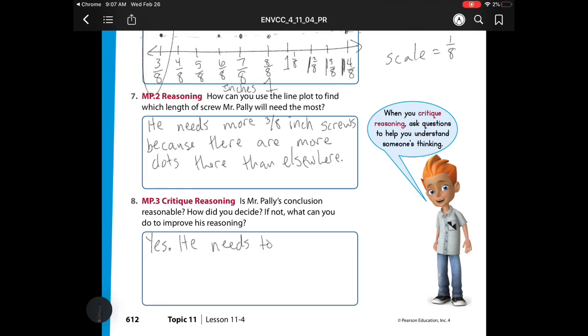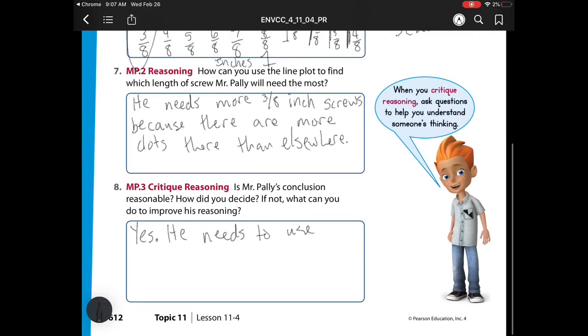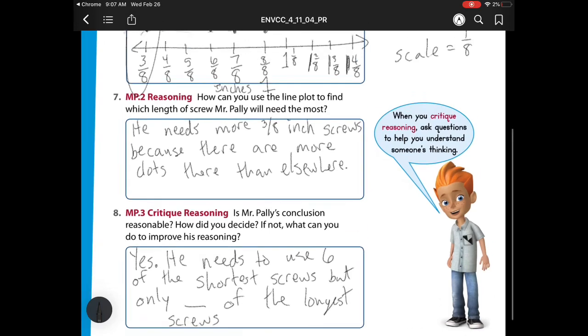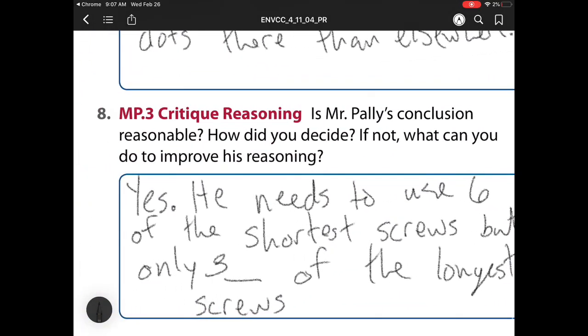He needs to use, let's see how many dots there were: 1, 2, 3, 4, 5, 6. He needs to use 6 of the shortest screws. But how many long ones did he need to use? But only blank of the longest screws. And let's see up here, he had 1, 2, 3. So he only needs to use 3 of those longest screws.